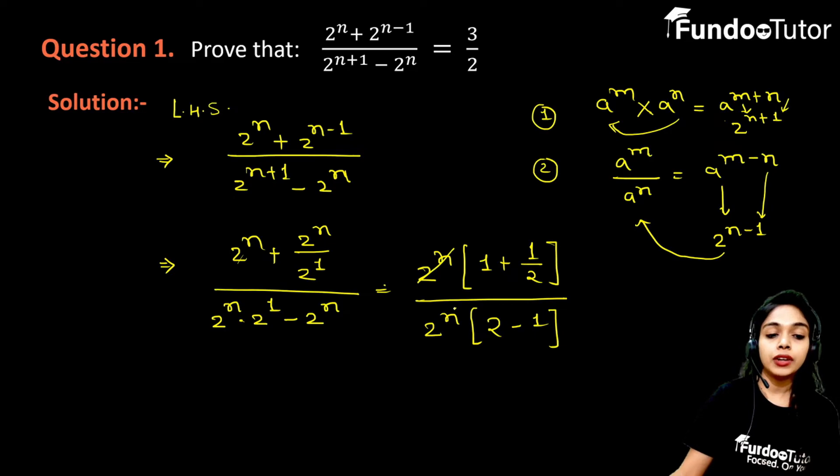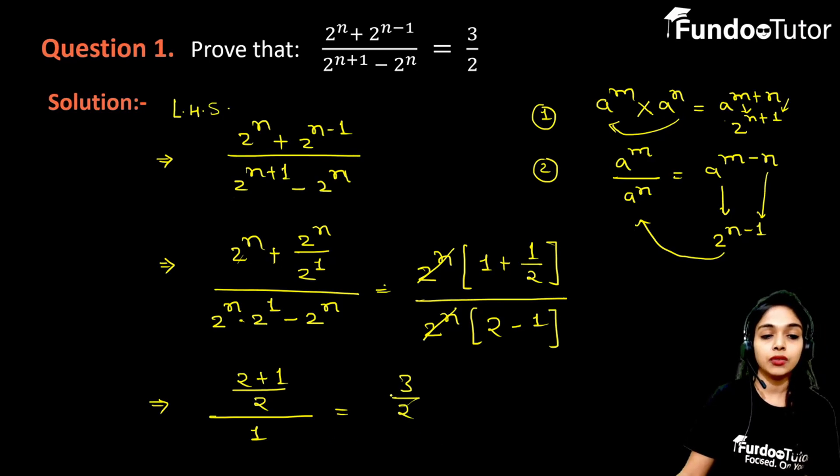Now 2 to the power n and 2 to the power n cancel. Then 1 plus 1 by 2, if we take LCM it will be 2, then the numerator is 2 plus 1 and divide it by 2 minus 1 which equals 1. So 2 plus 1 equals 3 by 2 divided by 1, which is 3 by 2. This is our right hand side portion.